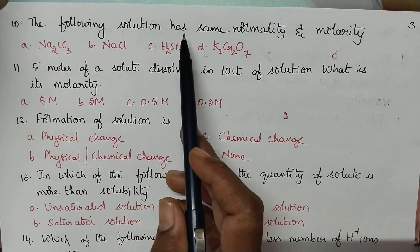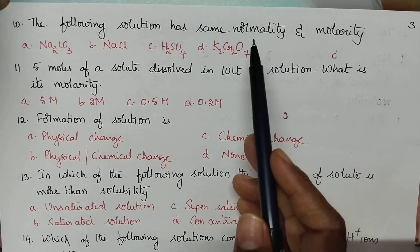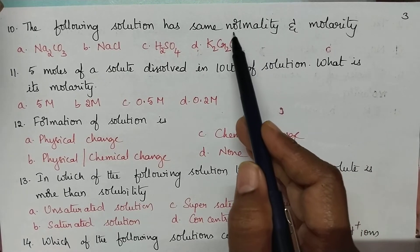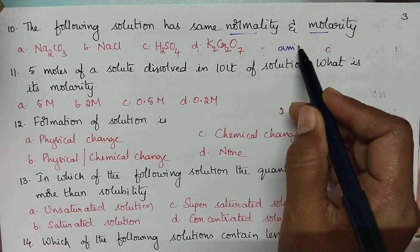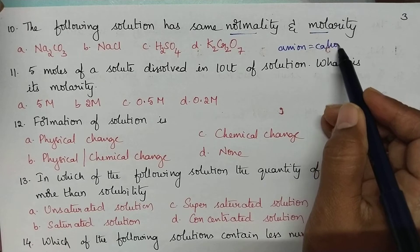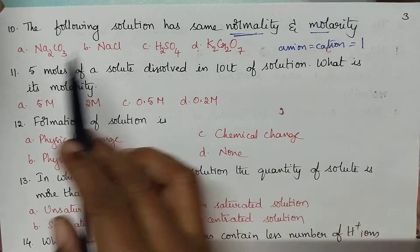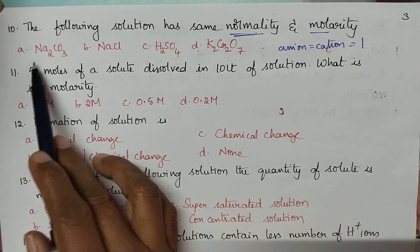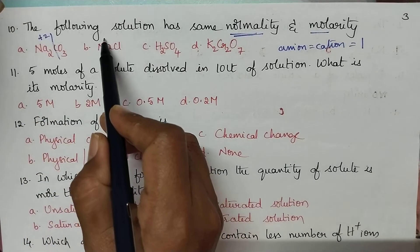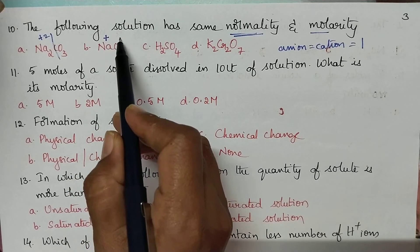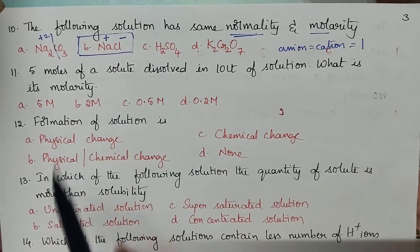Which of the following solutions has the same normality and molarity? A substance will have equal normality and molarity when the charge on its cation and anion is equal to 1. Sodium carbonate has cation charge +2, but sodium chloride has cation charge +1 and anion charge −1. So option B (NaCl) is the right answer.